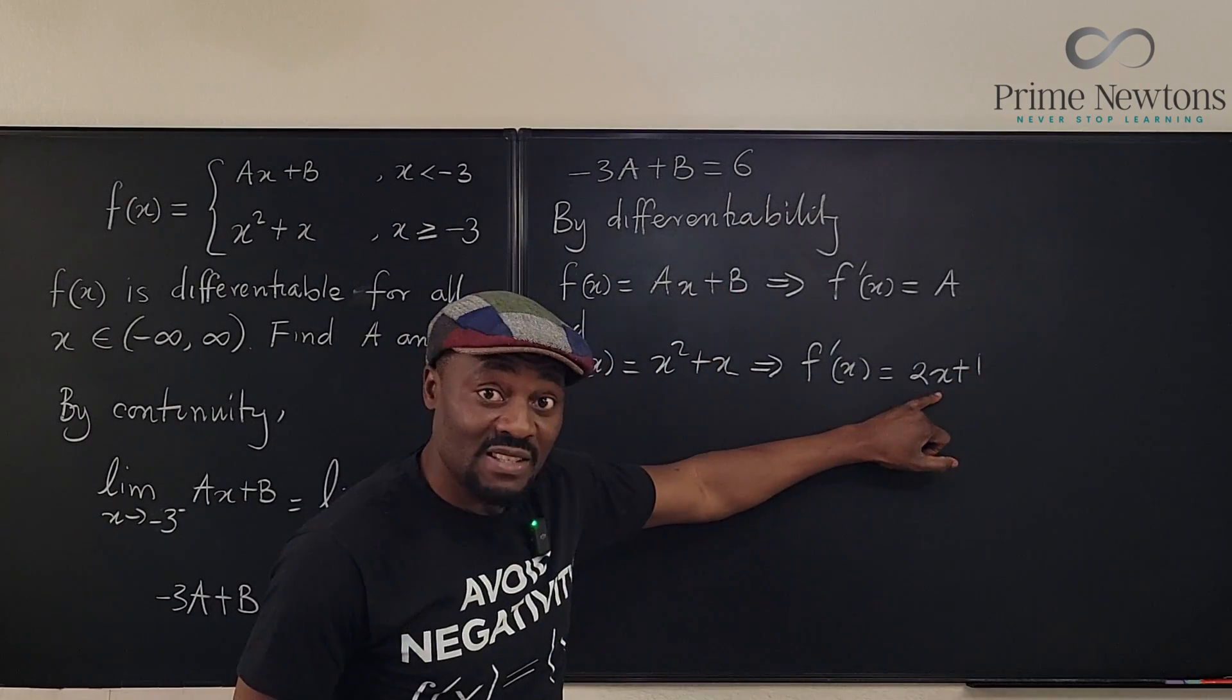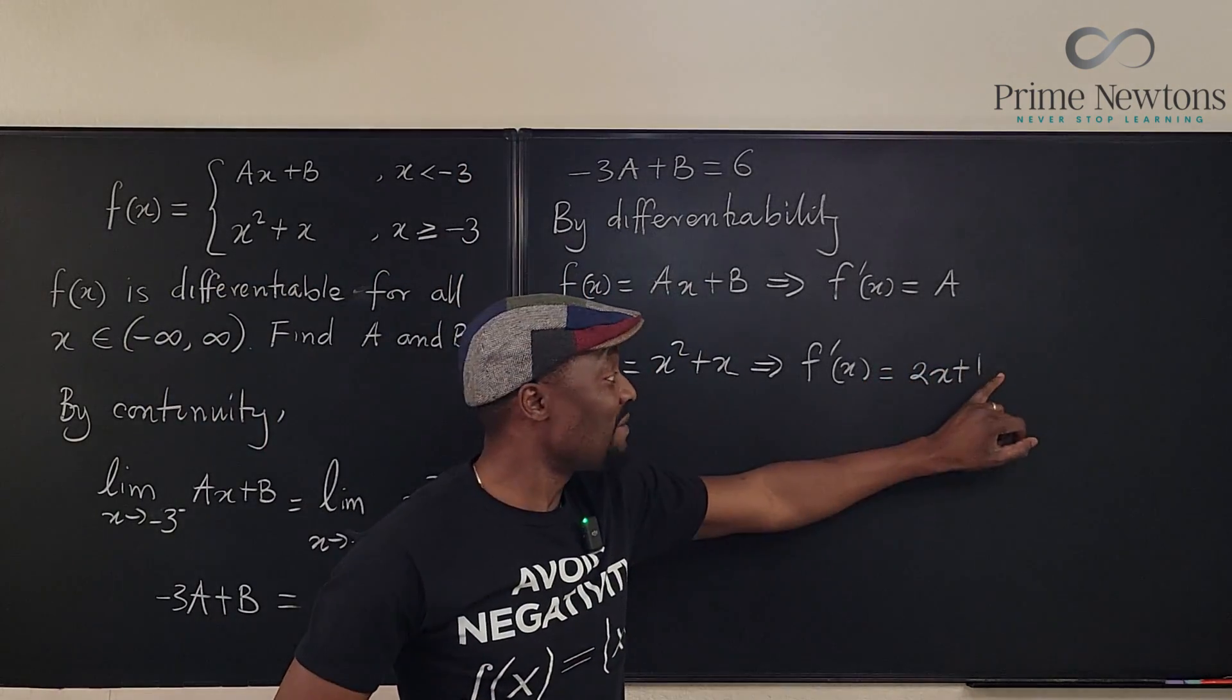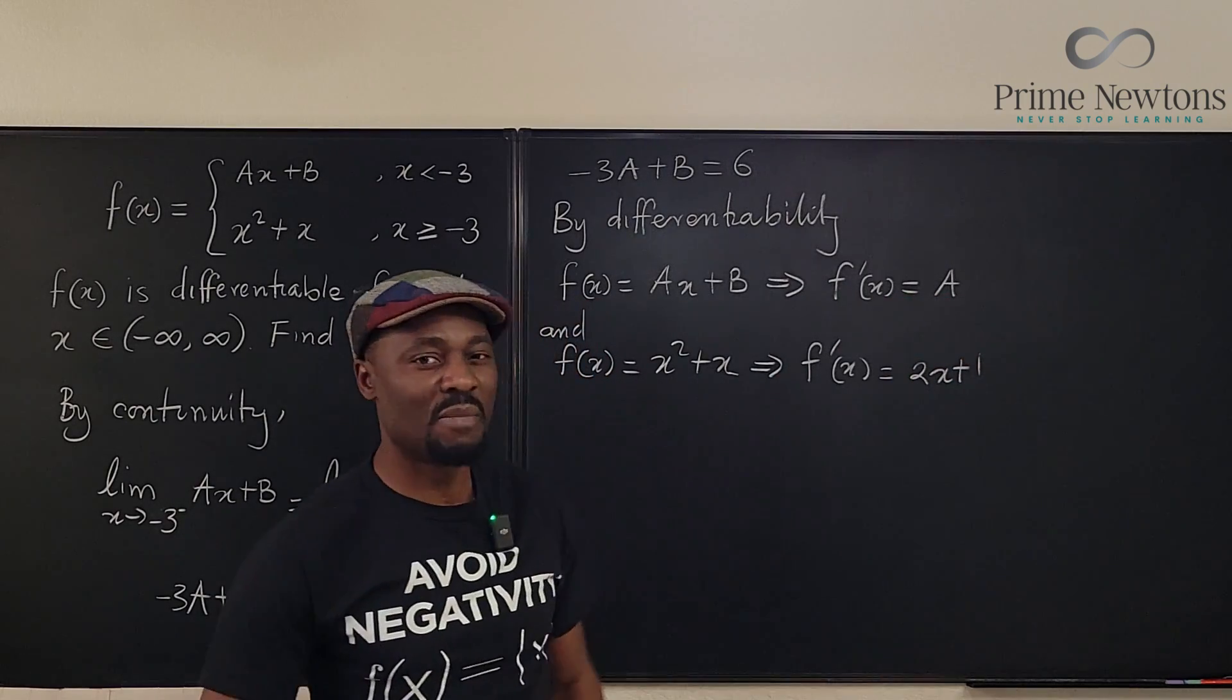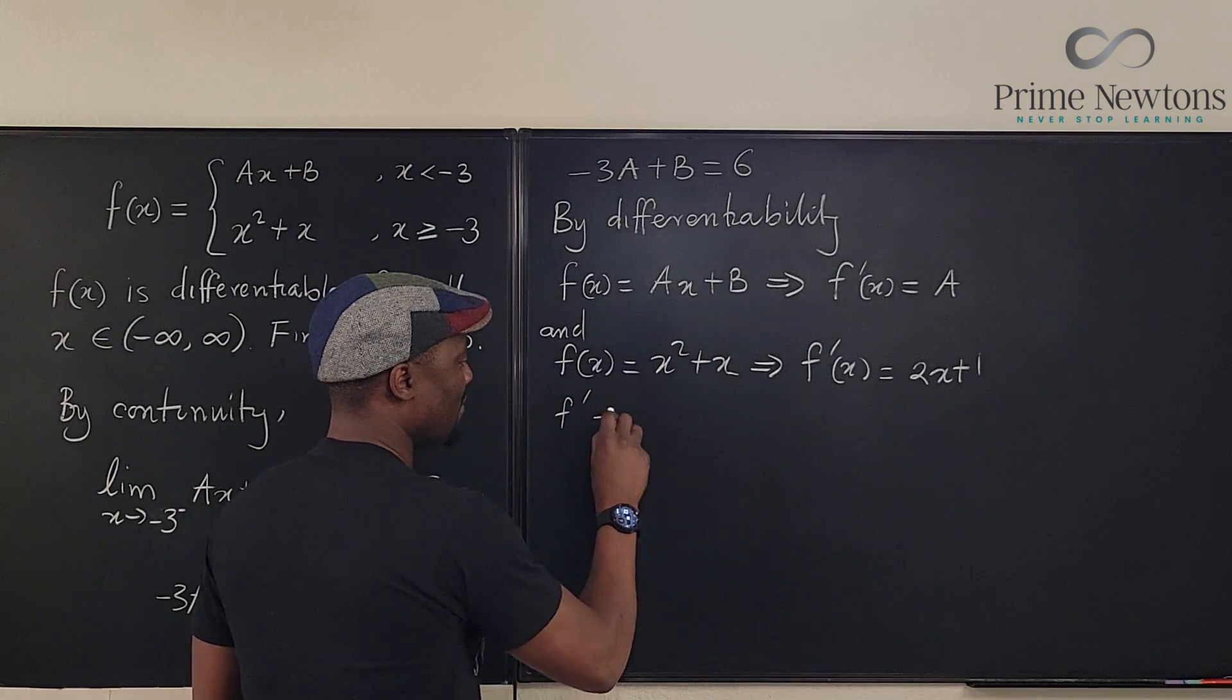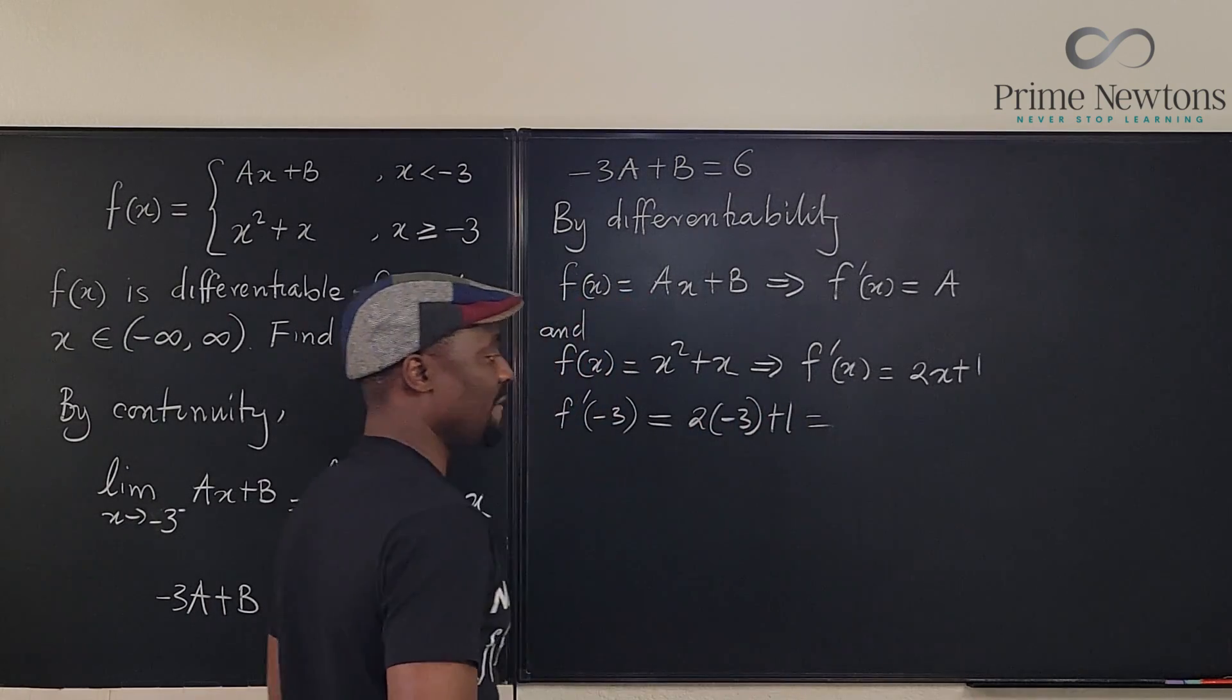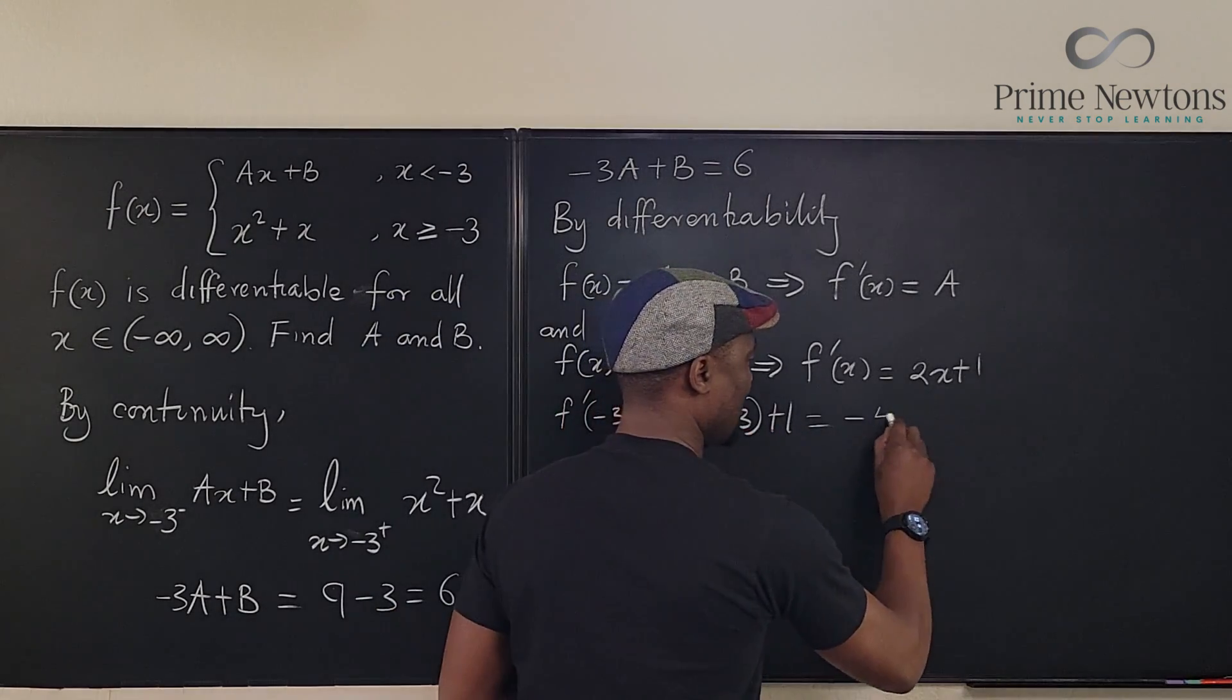So this is the derivative we're going to get, but this is only at this point. Remember, this one, at this point, we're going to evaluate it because the derivative at that point for this function is the same as this one. So if we plug in minus 3, which is this point, then we're saying f prime of minus 3 evaluated at minus 3 will be 2 times minus 3 plus 1. What do we get? We get minus 6 plus 1, which is minus 5. No way!